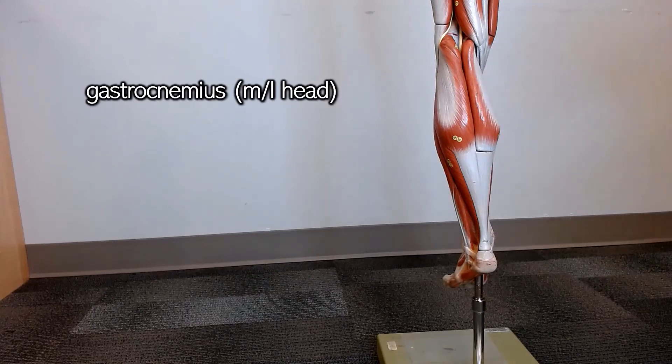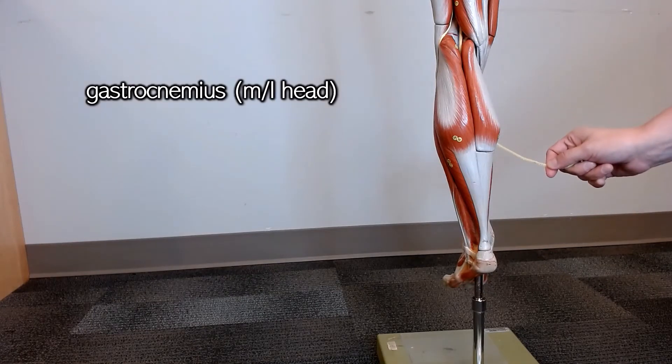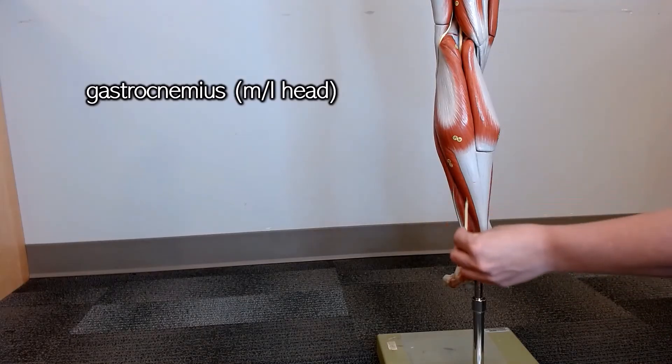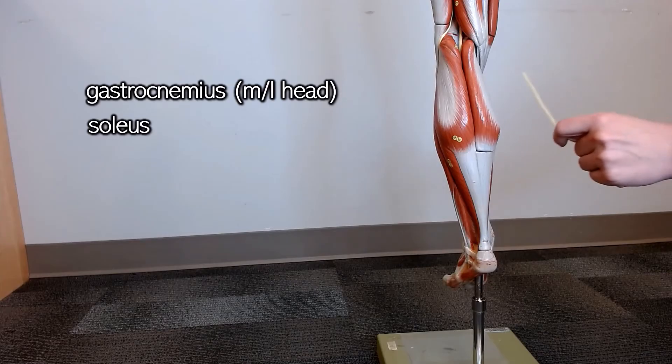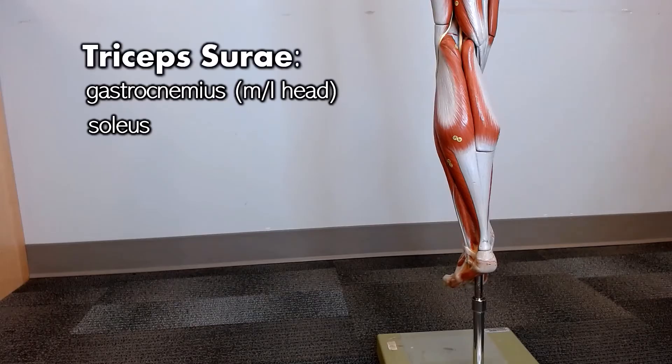The gastrocnemius is sitting over top of this muscle, which is the soleus. Together, the soleus and the medial and lateral head of the gastrocnemius make up the triceps surae.